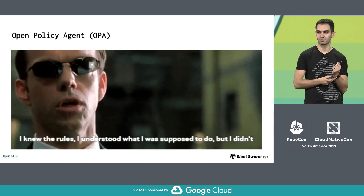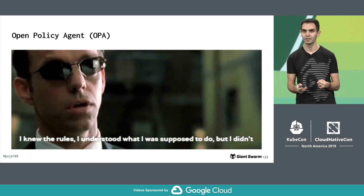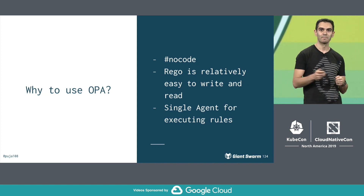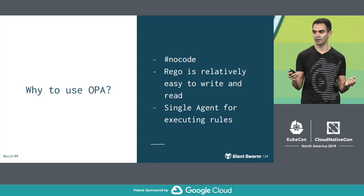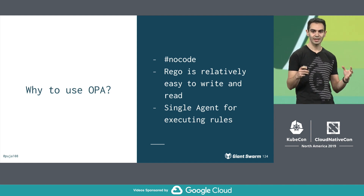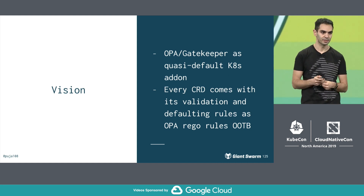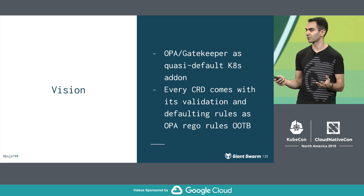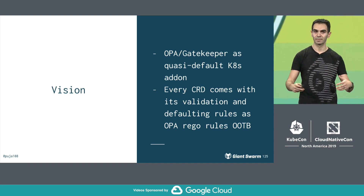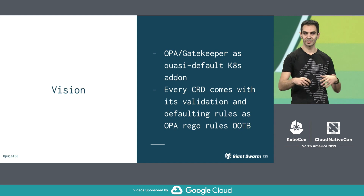You might remember I talked about Open Policy Agent. So why shouldn't you just build your own admission controllers? Why not just use Go, Python, Bash, whatever you want? The reason is: no code — not the Kelsey Hightower type, but you just need to write Rego rules. It's very easy to write and read, and you have a single agent implementing all these rules. The vision is to have Open Policy Agent or Gatekeeper — its admission controller implementation — as a default in most distributions. So as extenders of Kubernetes, together with my CRD and controller, I also roll out all the validation and defaulting rules that make it easy to use out of the box.